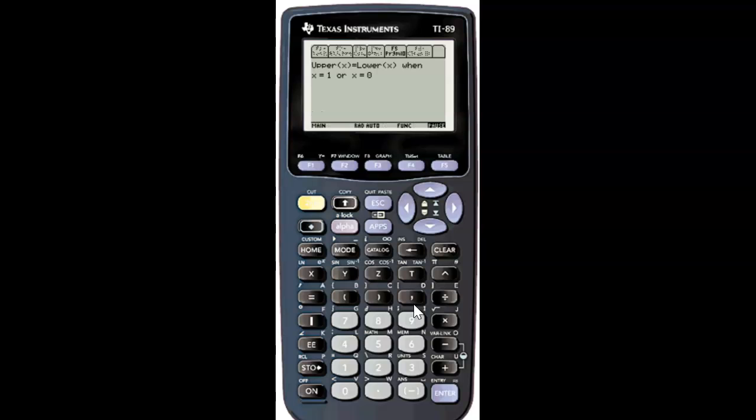We're leaving A and B blank, so it's showing us the lower bounds are zero and one.